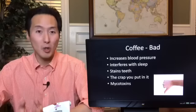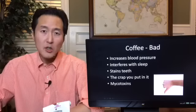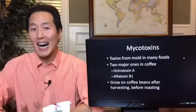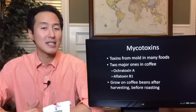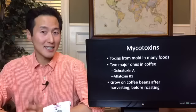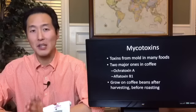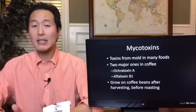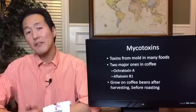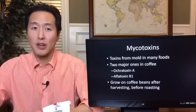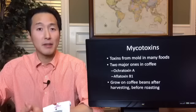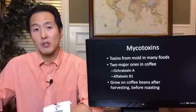And then there's a question about mycotoxins or mold toxins. So what exactly are mold toxins? Well, mycotoxins are basically toxins from mold and these are present in many, many foods. The two major ones that we see in coffee are ocratoxin A and aflatoxin B1. And it's basically known that these types of mold toxins will actually grow on coffee beans after they're harvested, but before they're roasted. When they're in storage, they're in a warehouse, they're in a vat, that type of thing, then mold can actually grow on those coffee beans.